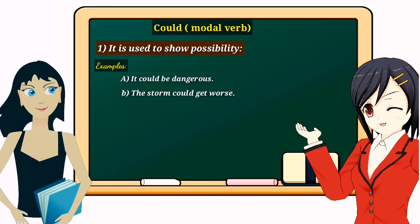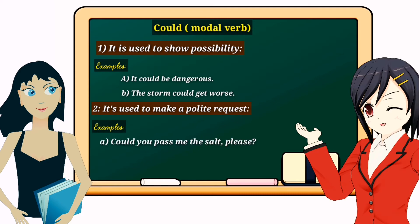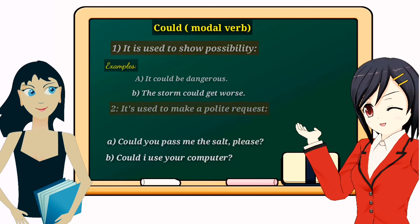The second use is to make a polite request. For example, 'Could you pass me the salt, please?' Here 'could' is not used for possibility but for a polite request. Another example: 'Could I use your computer?' — it is used for a formal request, as a formal way to ask someone to allow you to use their computer.